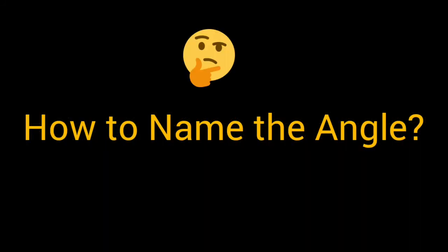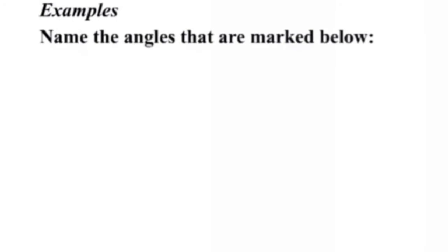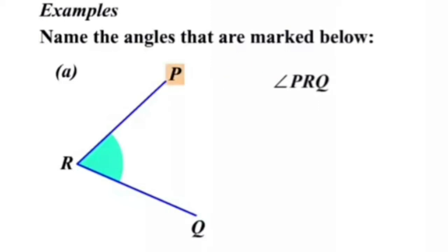Now, let us learn how to name these angles. Let us take an example. In this figure, this angle can be called angle PRQ. The sign which looks like an acute angle we use to represent an angle. While naming the angle we use from top to bottom which is PRQ or from the bottom to top which is QRP.